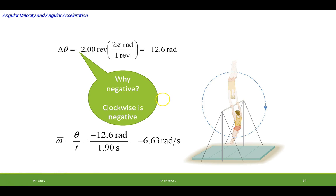Now we can easily throw it into our equation. The average angular velocity would be equal to the displacement, -12.6 radians, over the time, and you come up with -6.6 radians per second.